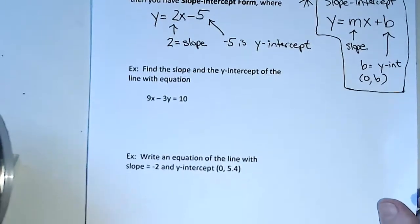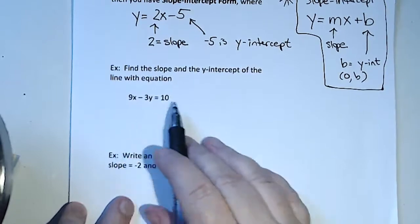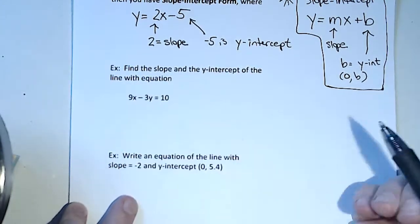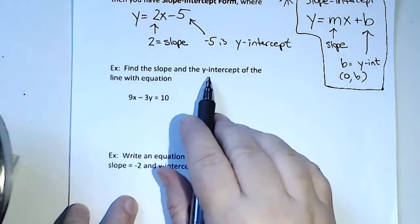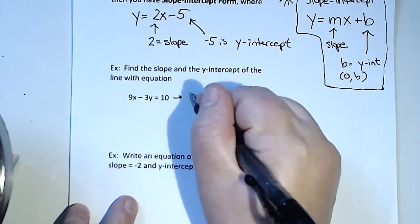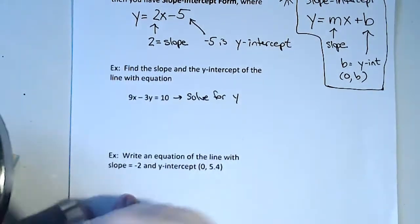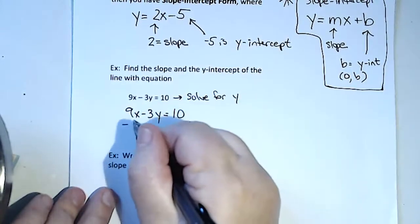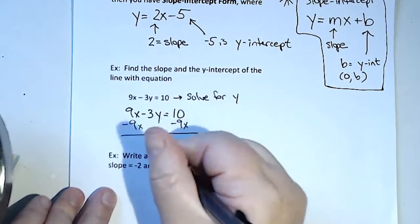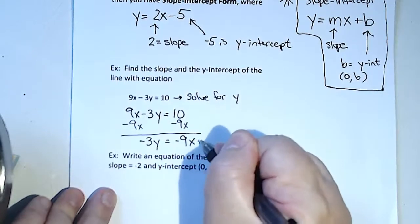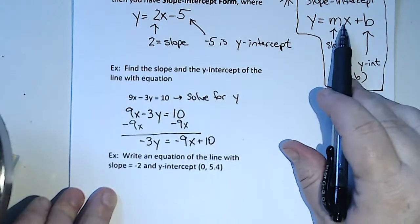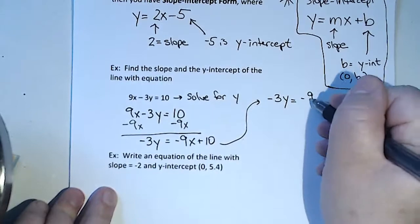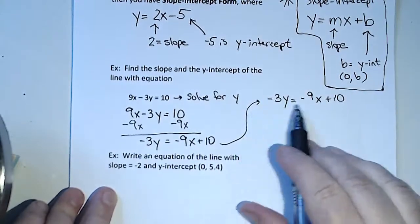Find the slope and y-intercept of the line with equation 9x - 3y = 10. If you want the slope and y-intercept, we need to solve for y. I've got 9x - 3y = 10, so I'm going to subtract 9x from both sides. On the right side, I'm going to write the x first because I know that in slope-intercept form, I want mx + b. So -3y = -9x + 10. I'm solving for y, so I'll divide everybody by -3.